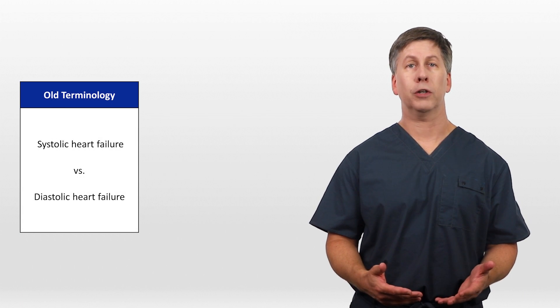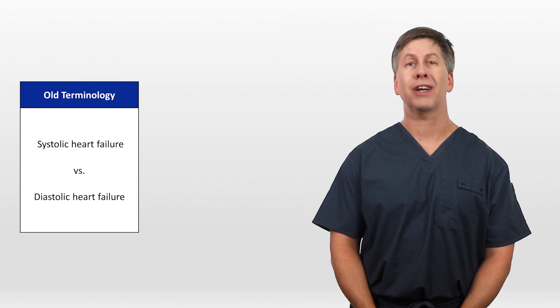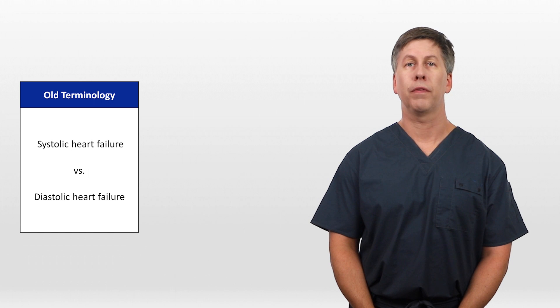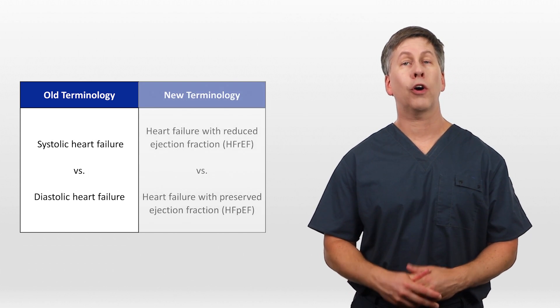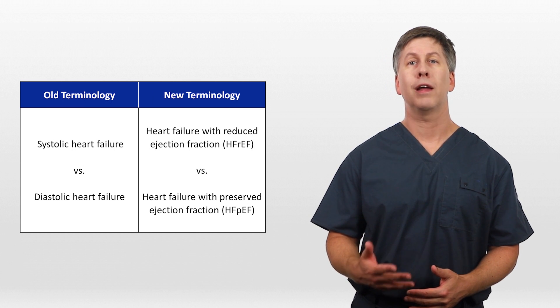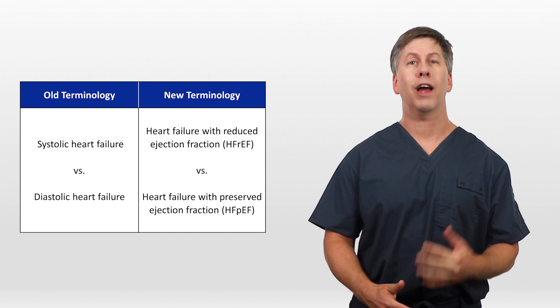The most common way to classify heart failure is based upon whether or not the heart's systolic function, specifically the ejection fraction, is compromised. In older terminology, failure was called either systolic or diastolic heart failure. However, this is a misnomer since any heart that experiences systolic dysfunction also experiences at least some degree of diastolic dysfunction. So starting around 2008, cardiologists began referring to heart failure with reduced ejection fraction, abbreviated HFrEF, and heart failure with preserved ejection fraction, or HFpEF.